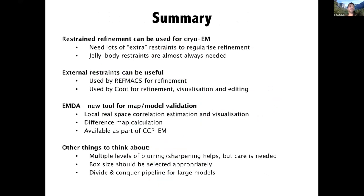In summary: restrained refinement can be used for cryo-EM. We need lots of extra restraints to regularise refinement — jelly body restraints are almost always needed. External restraints can be useful, used by RefMAC 5 for refinement as well as by Coot for visualisation and editing. EMDA is a new tool for map and model validation, allowing local real-space correlation estimation and visualisation, difference map calculation, and is already available as part of CCPEM. Multiple levels of blurring and sharpening help, but care is needed. Box size should be selected appropriately, and consider using the divide-and-conquer pipeline for large models.